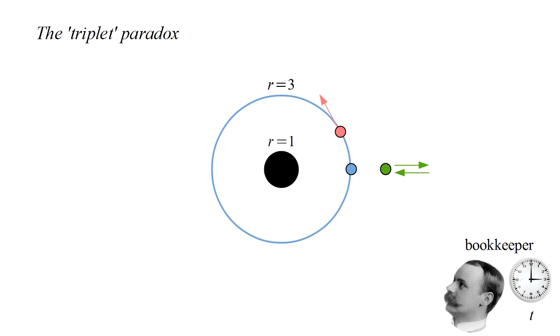The bookkeeper, with his clock reading time t, observes and keeps track of all events. Let's call the readings of the clocks TLO for the stationary local observer, TOR for the orbiting triplet, and TUD for the up-down triplet.